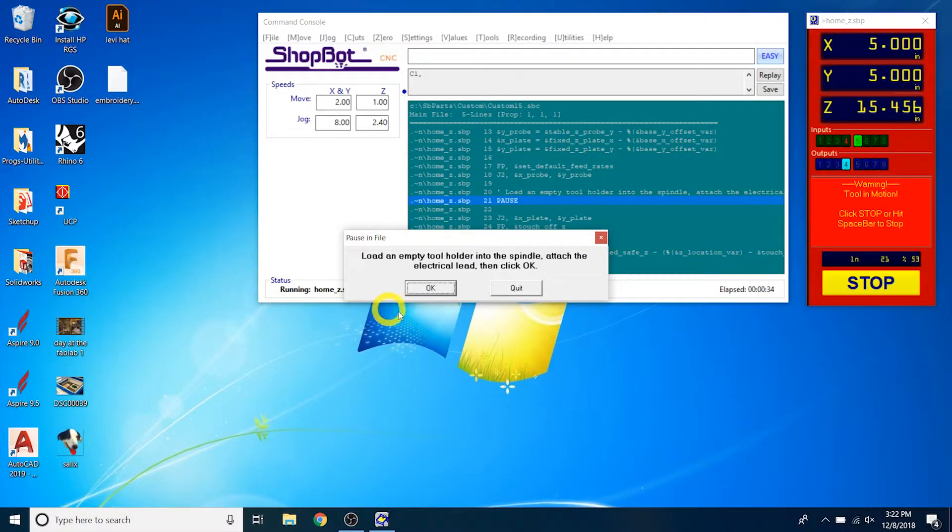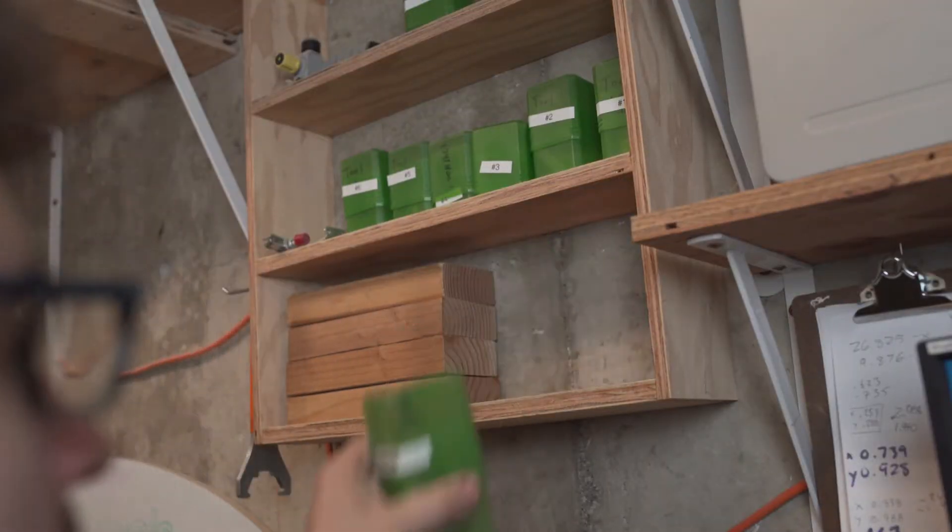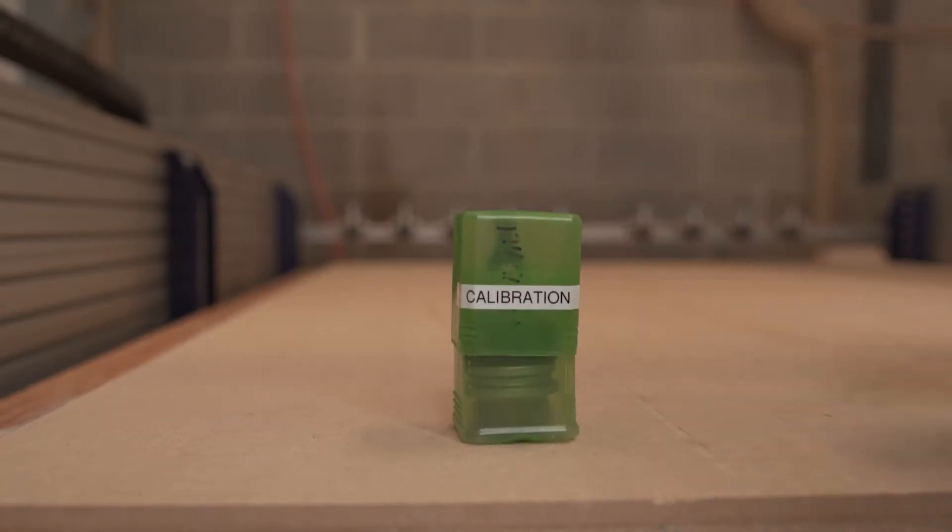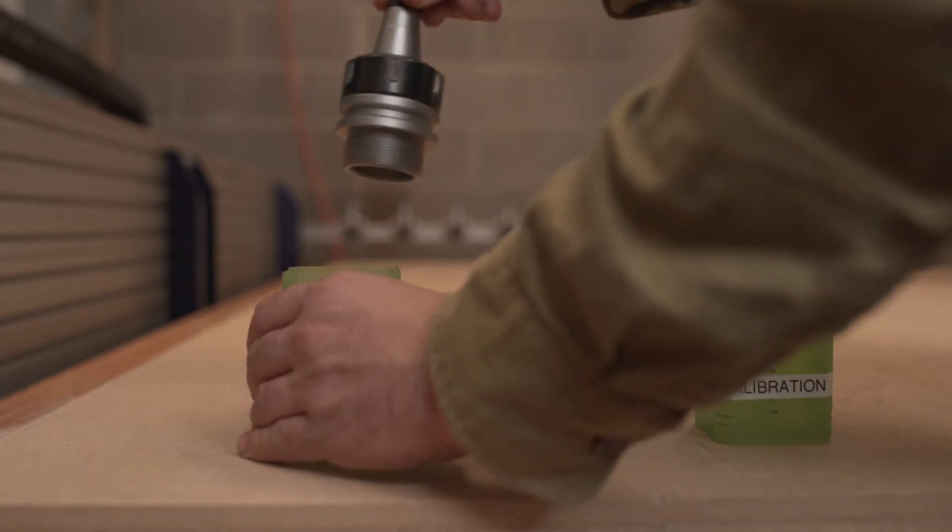When the dialog box prompts you, grab the calibration tool from the shelf. Remove the empty tool holder from the box, as seen here.